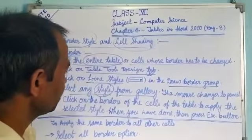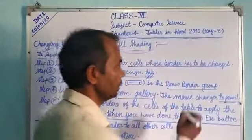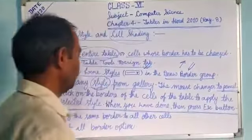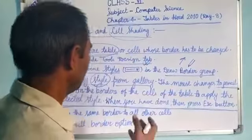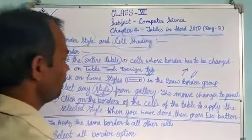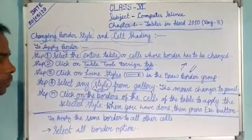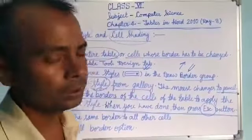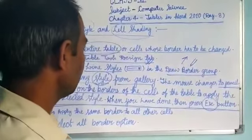Whenever you click a style option, your mouse pointer changes to a pencil. The mouse pointer is generally an arrow, but it will change to a pencil shape. Then go to your cells, wherever you want to apply the border, and click on the borders of the cells. That style will automatically be applied there. After you are done, press the Escape button to finish or continue with another cell.